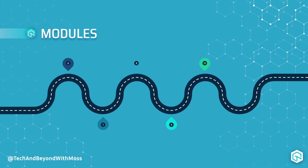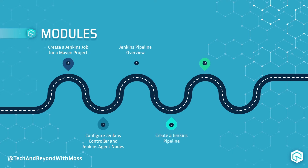Once you learn how to schedule builds, I'll then walk you through the creation of a Jenkins controller and Jenkins agent nodes to facilitate distributed builds. This will lead us to an introduction of Jenkins pipelines, and we'll create our very own pipeline in our Jenkins instance. And finally, we'll add automated cross-browser testing into our Jenkins pipeline using LambdaTest.